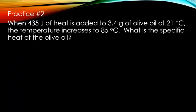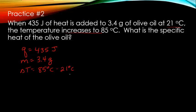If we do one more, this one's very similar. We are given a Q value. It tells us we have 435 joules of heat. It also tells us that our mass of olive oil is 3.4 grams. And it tells us that it started at 21 degrees Celsius, and it increased to 85. So our change in temperature is 85, which is our final, minus our initial of 21. So you're looking at your temperature difference of 64 degrees Celsius.